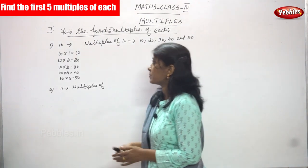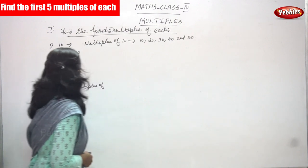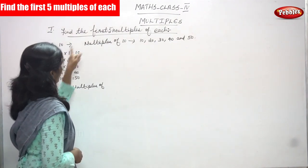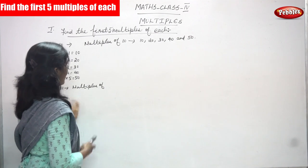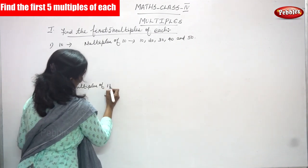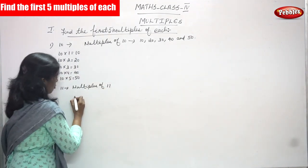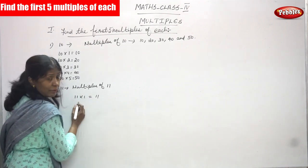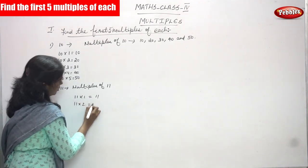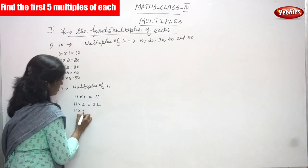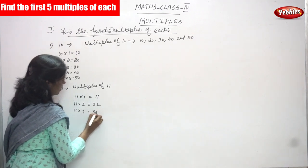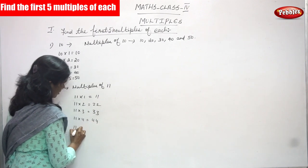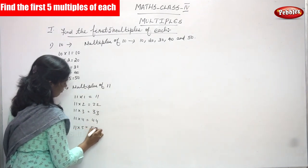Next, 11 — you have to find the first 5 multiples of 11. So first you have to write the multiplication table of 11. 11 into 1 is equal to 11, 11 into 2 is equal to 22, 11 into 3 is equal to 33, 11 into 4 is equal to 44, 11 into 5 is equal to 55.